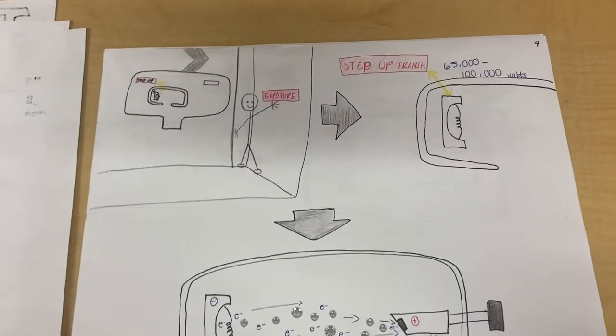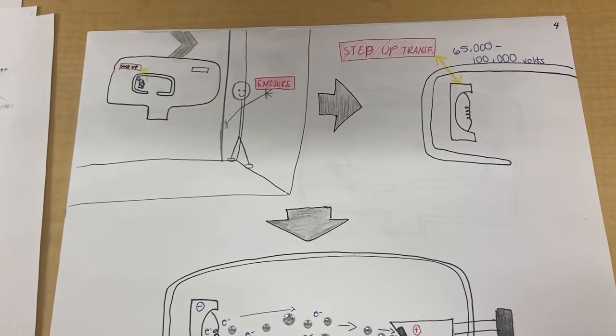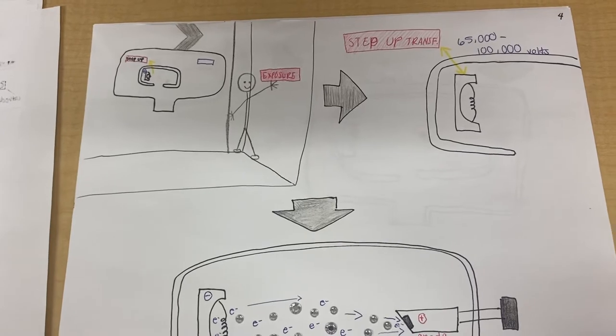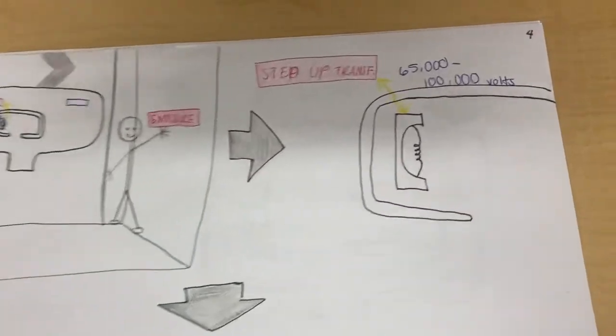So then going on, the clinician, hidden by a nice lead-lined wall, will press the exposure button. The line current will then enter the step-up transformer, also known as the high-voltage circuit, see here.